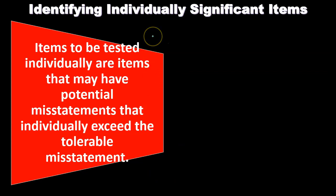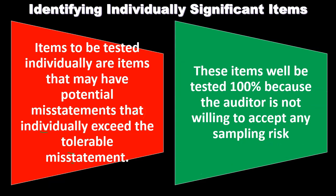Starting with identifying individually significant items. Items to be tested individually are items that may have a potential misstatement that individually exceeds the tolerable misstatement. In other words, if we look through the data and an individual item's misstatement could exceed the tolerable misstatement, we want to pick those items out. These items will be tested 100% because the auditor is not willing to accept any sampling risk with regards to these significant items.